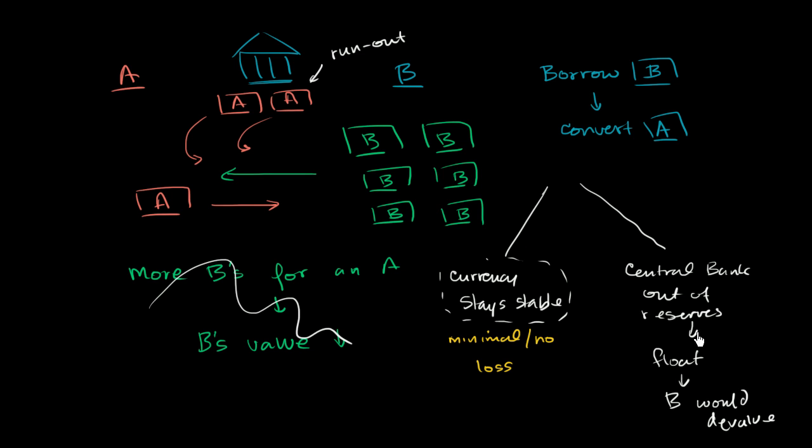But what happens if the central bank runs out of reserves? And remember, just the fact that these speculators are doing this speculative attack, they're borrowing in country B and converting to A, that's making the central bank run out of reserves even faster. It's going to deplete their reserves. Essentially, when they do this, it's the central bank of country B that's going to be allowing them to convert. And so, if this happens, that the central bank runs out of reserves, it floats, and then B devalues, then those currency speculators make a pretty good buck.